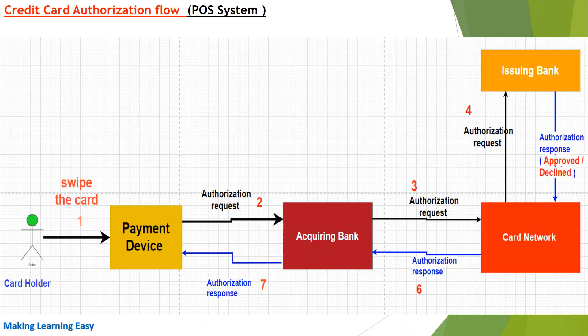Now let's see the actual process. I have drawn a diagram showing the flow of authorization in a point of sale system. When you make a payment with a credit card or debit card at the point of sale system, you see one payment device where you insert or swipe your card. The yellow box in the diagram is showing that device. When a business ties up with an acquiring bank, the acquiring bank provides that device to them. The acquiring bank has its own payment processor, and the merchant also has an account in the acquiring bank, which is why it is also known as a merchant bank.